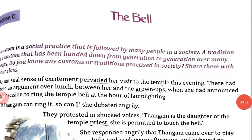Hello students, welcome back to CG Board Online Classes. Today we are going to start the final part explanation of the lesson 'The Bell', from your book My English Garden, Class 7th, Unit 4, Learning from Life, Section C. In the last two videos we watched part 1 and part 2 of the explanation, and in this video we are going to complete the lesson.